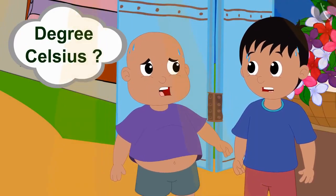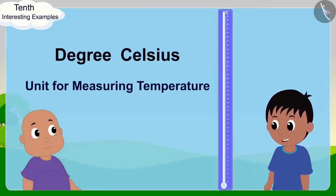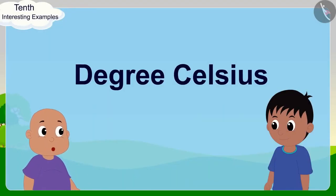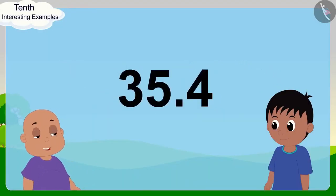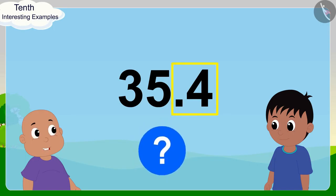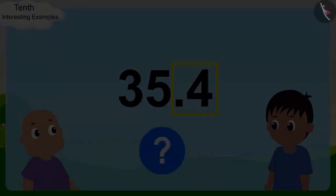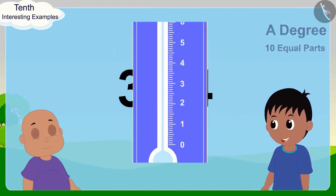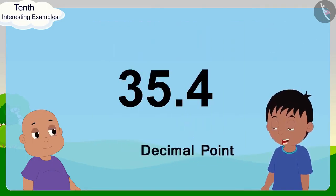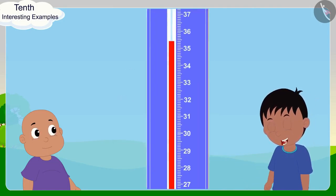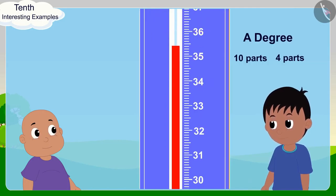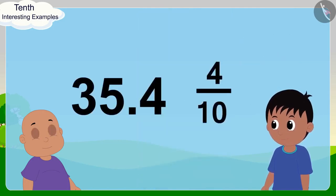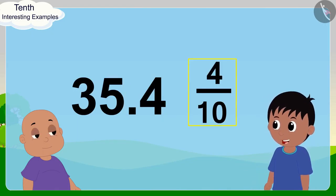Babalu asked: What is degree Celsius, Raju? Raju explained: Degree Celsius is the unit for measuring temperature. Babalu said: Okay, I understood degree Celsius. Yes, 35.4 degrees Celsius. Raju, 35 is fine, but what is this 0.4? Raju replied: One tenth indicates that a degree is being divided into ten equal parts. And because the number after the decimal point is 4, we can say that here we are taking 4 out of the ten parts of a degree. In this way, we can also write 0.4 as 4 tenths in the form of a fraction.